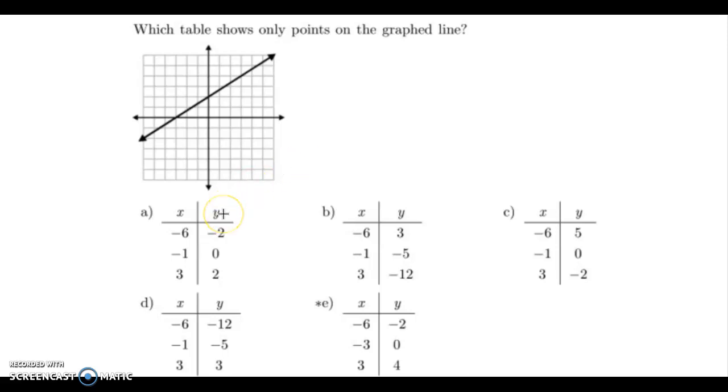So I'm going to start with letter A. The first set of coordinates is negative 6, negative 2. I always start on the origin, and I always move left and right before up and down. So the x value is telling me to move left 6: 1, 2, 3, 4, 5, 6 because it's negative. And because y is negative 2, that means I go down 2: 1, 2. Well, so far so good. That one is right on the line.